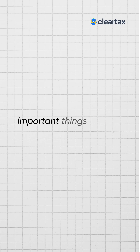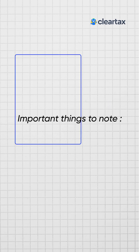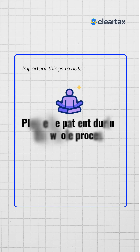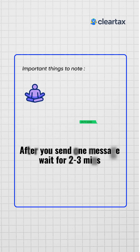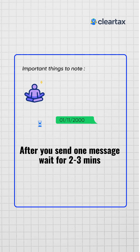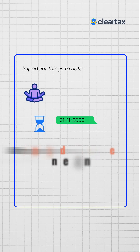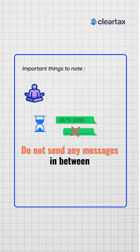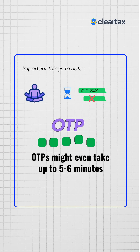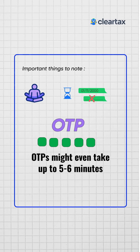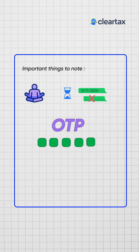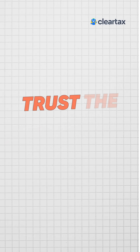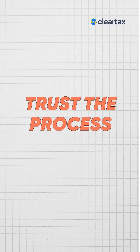Please be very patient during the whole process. After you send one message, kindly wait for 2 to 3 minutes and do not send any messages in between. Sometimes an OTP might take around five to six minutes to come to your phone and email. Just be patient and trust the process.